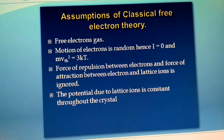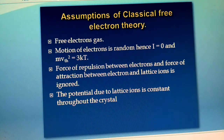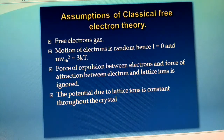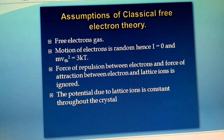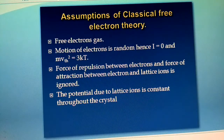According to the classical free electron theory, the metal contains a large number of free electrons moving through the crystal. Those electrons move throughout the crystal due to thermal agitation. The system of these electrons is called electron gas, because the behavior of electrons is just like the behavior of gas molecules enclosed in a closed cylinder.